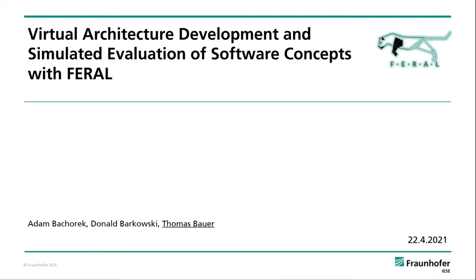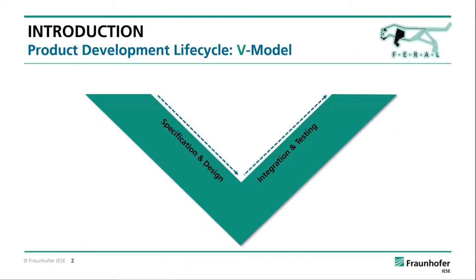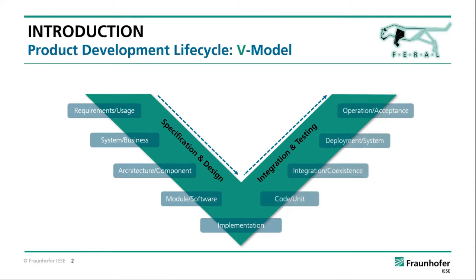Today I will give some insights into the method and also the tool, with some concrete examples. When we look at the development process of today's complex systems, we usually need a systematic process model — everybody is aware of that — with dedicated specification and design techniques, a top-down approach, and integration and testing activities conducted in a bottom-up way.